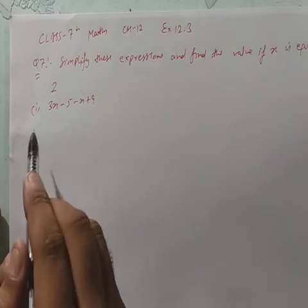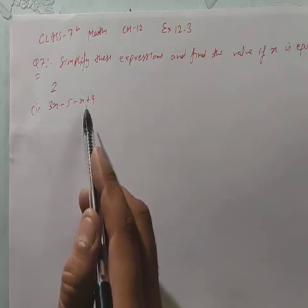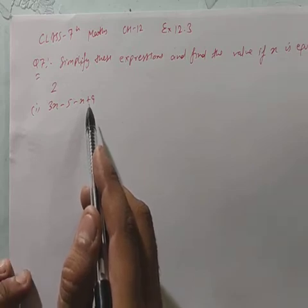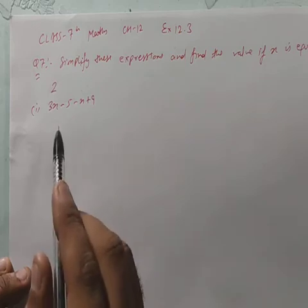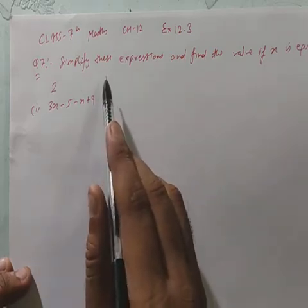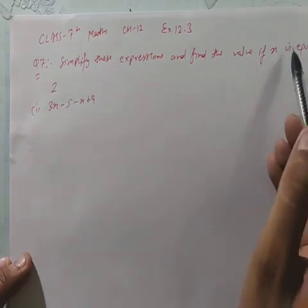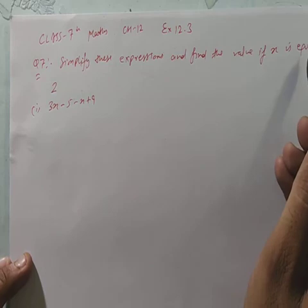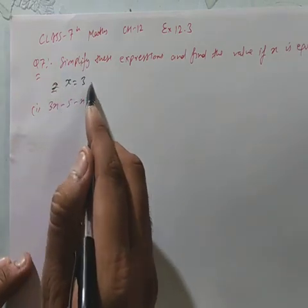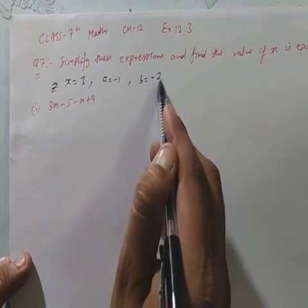x is equal to 2. अब आपके पास है 3x minus 5 minus x plus 9. Question 7 में अलग-अलग values दी हुई हैं। Simplify the expression and find the value when x is equal to 3, a equal to minus 1, and b equal to minus 2.